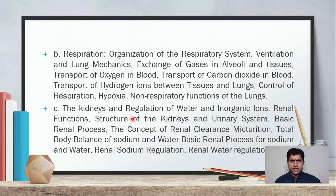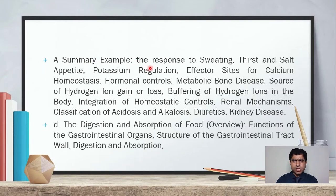Subheading C is the kidneys and regulation of water and inorganic ions. Renal functions, structure of the kidneys and urinary system, basic renal processes, the concept of renal clearance, micturition, total body balance of sodium and water, basic renal processes for sodium and water retention, renal sodium regulation, and renal water regulation will be discussed. Additionally, the response to sweating, thirst and salt appetite, potassium regulation, calcium homeostasis, hormonal controls, metabolic bone diseases, hydrogen ion buffering, integration of homeostatic controls, renal mechanisms, classification of acidosis and alkalosis, diuretics, and kidney diseases will be covered.